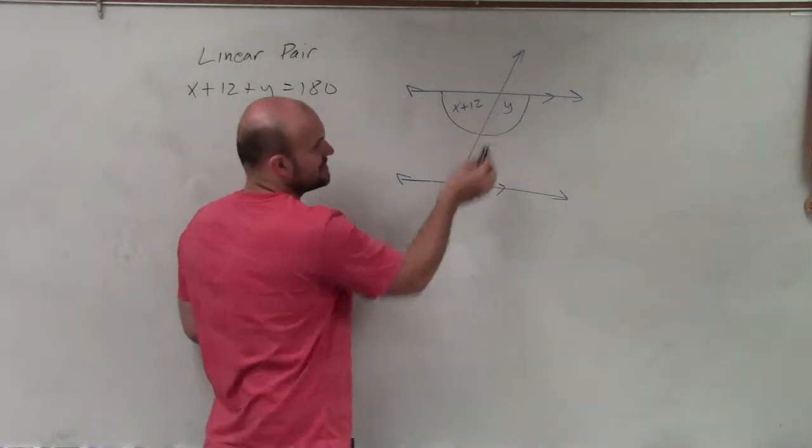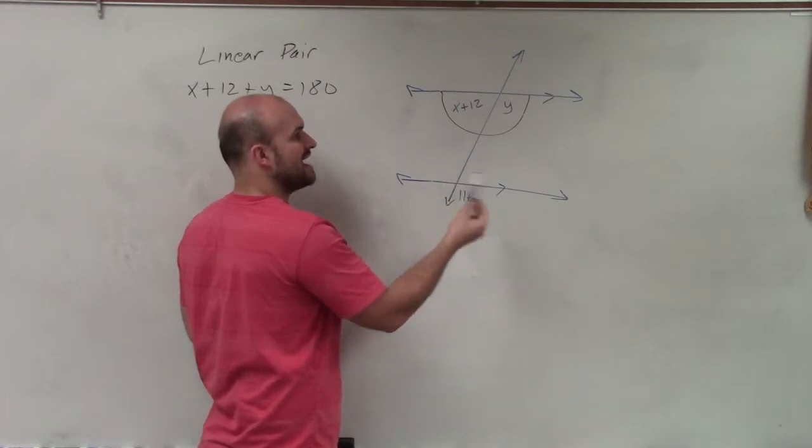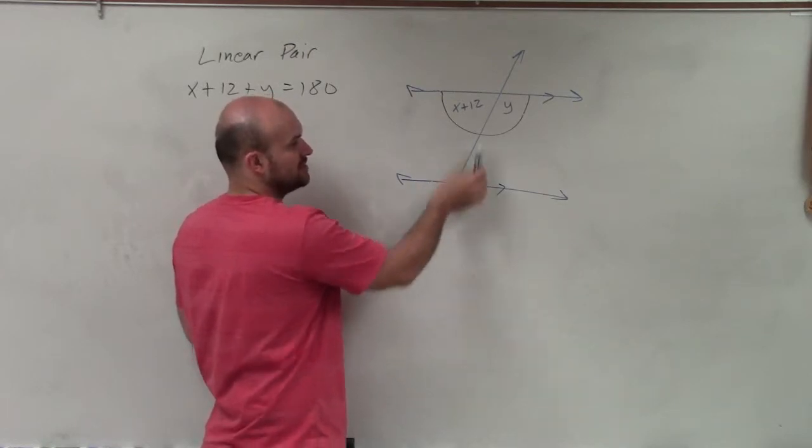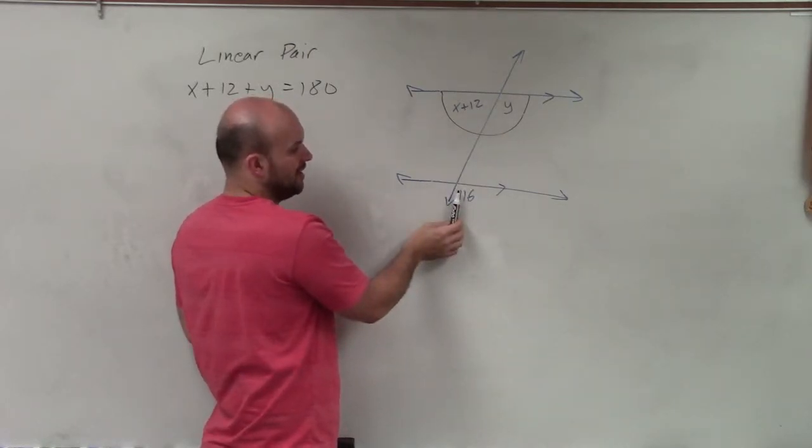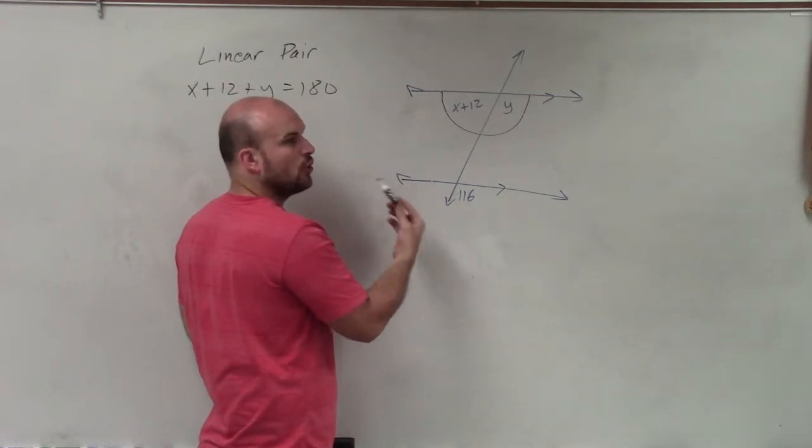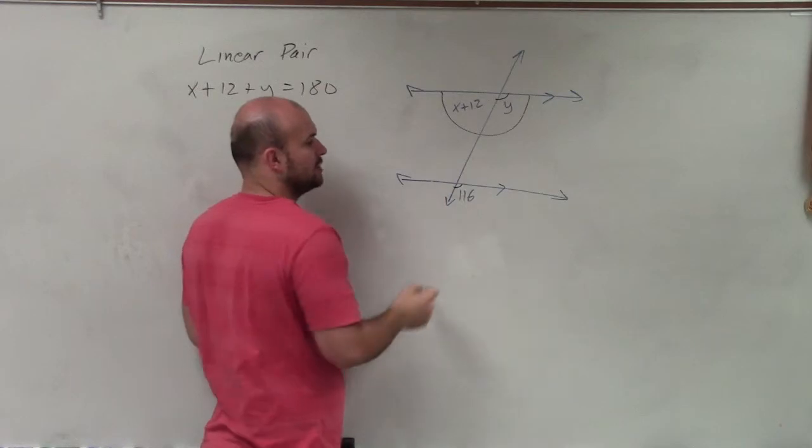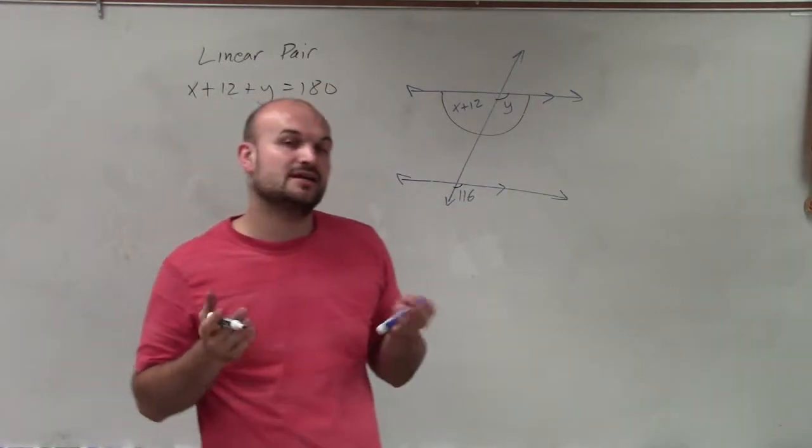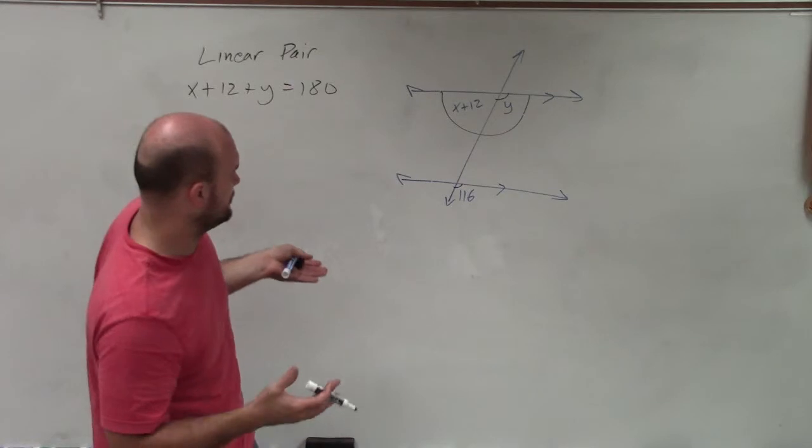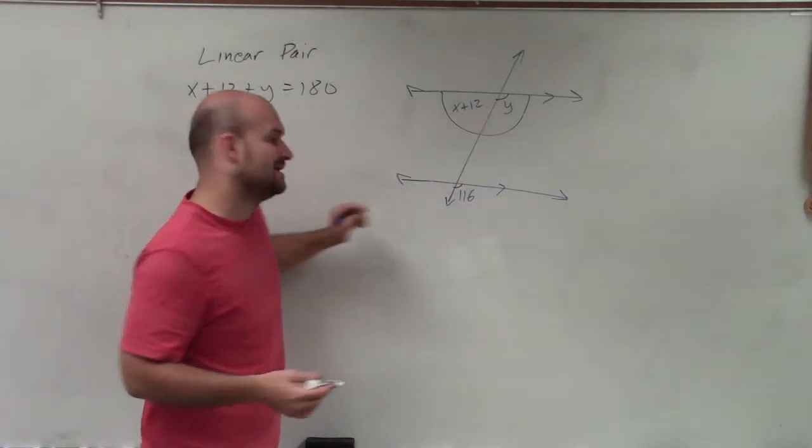We do have one, though, when one's interior, one's exterior, when they're in the same exact position of the intersection of the transversal and the parallel lines. And those are what we call corresponding angles. You can see that these are both in the bottom left-hand corner of your parallel lines and the transversal, or the intersection of the parallel line and the transversal. So they're corresponding angles.